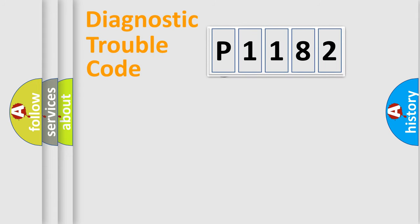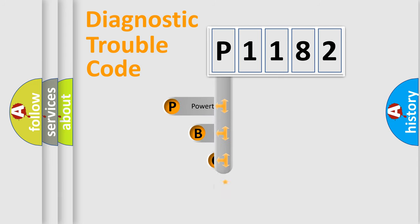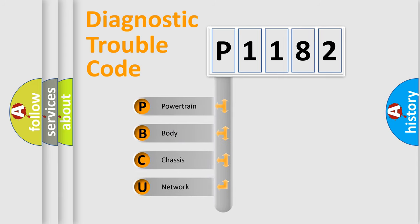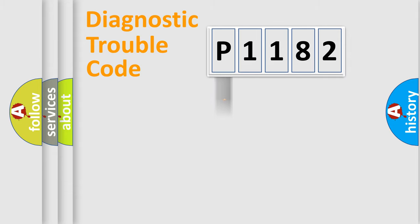Let's look at the history of diagnostic fault code composition according to the OBD-2 protocol, which is unified for all automakers since 2000. We divide the electric system of an automobile into four basic units: Powertrain, Body, Chassis, and Network. This distribution is defined in the first character of the code.